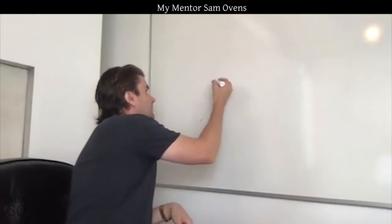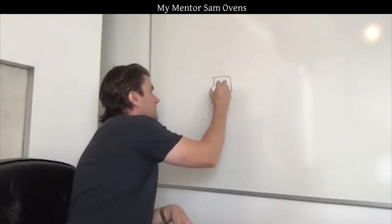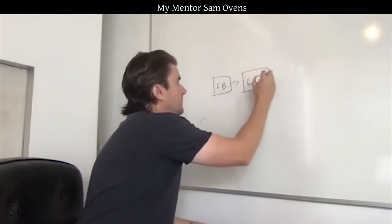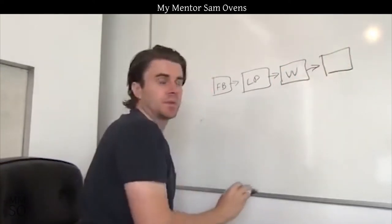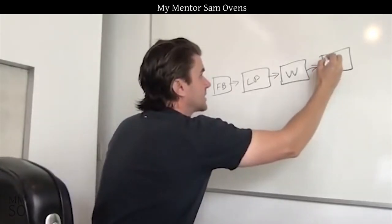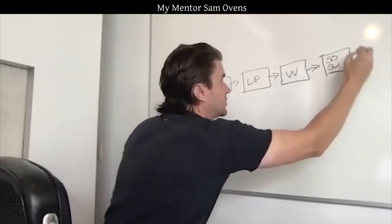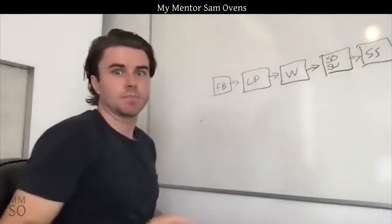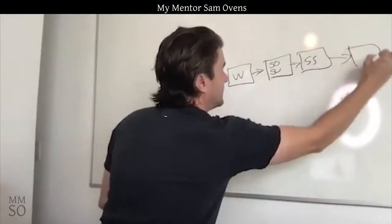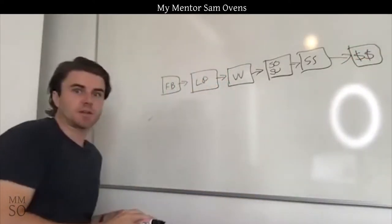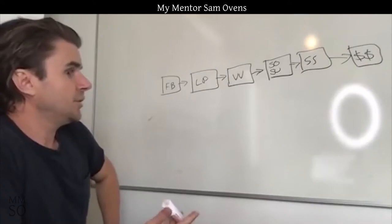So this is one that people really mess up. We'll go on to this little whiteboard. If we've got Facebook ads coming in here, and then we've got the landing page, and then we've got the value video, and then we've got the Schedule Once and survey, then we've got the strategy session, and then we've got the customer. So that's our basic flow here.